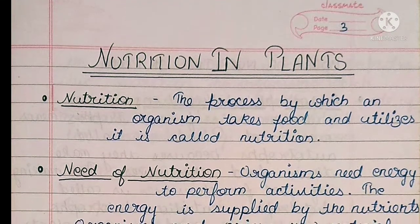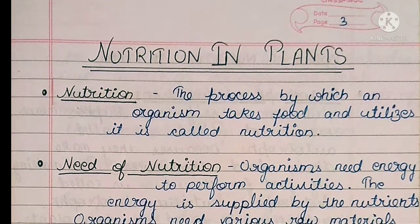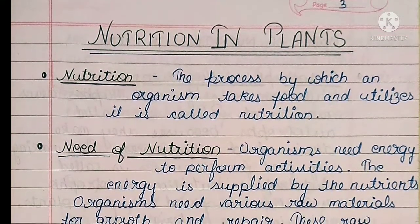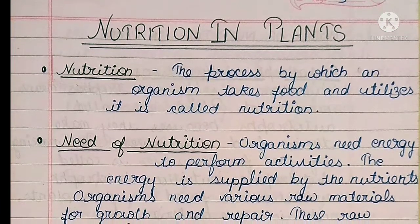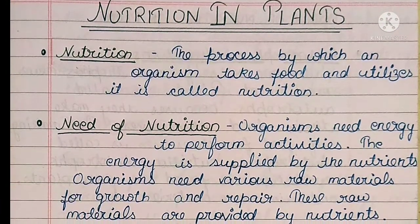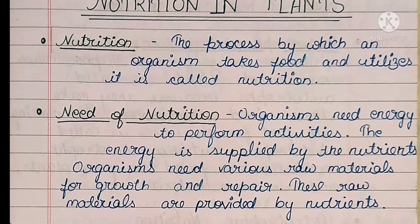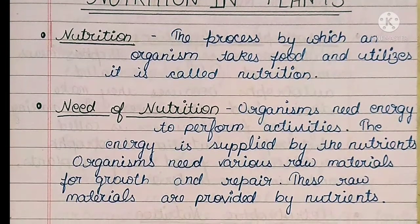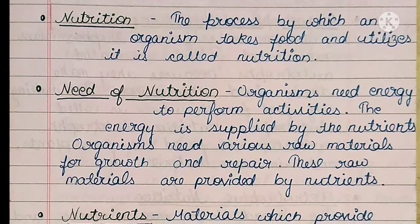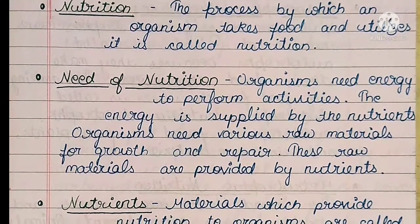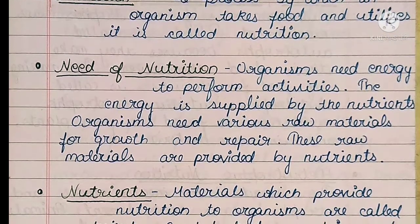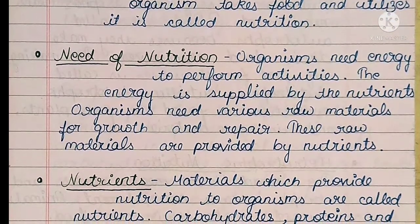Nutrition in Plants. The process by which an organism takes food and utilizes it is called nutrition. Organisms need energy to perform activities, and this energy is supplied by nutrients. Organisms also need various raw materials for growth and repair, and these raw materials are provided by nutrients.